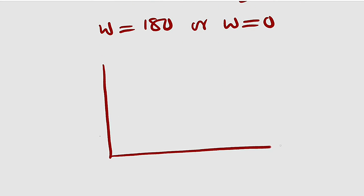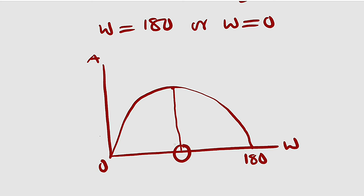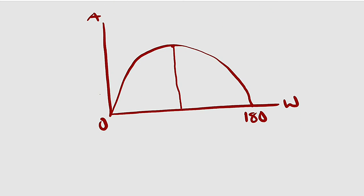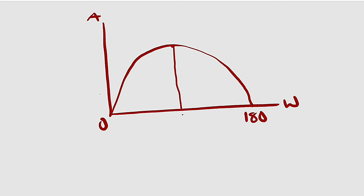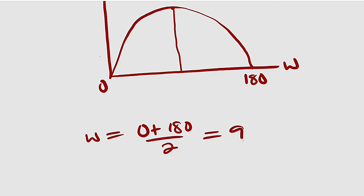Let us sketch it. Suppose we have a parabola — it is an upside-down parabola. This is 0 on the w-axis. This is where w is 0, and this is where w is 180. This is our area. So at the midpoint is where we are going to obtain the greatest, that is the maximum area. To find that value, we take the line of symmetry: add the two zeros together and divide by 2. So the required w is equal to (0 plus 180) divided by 2, which equals 90.